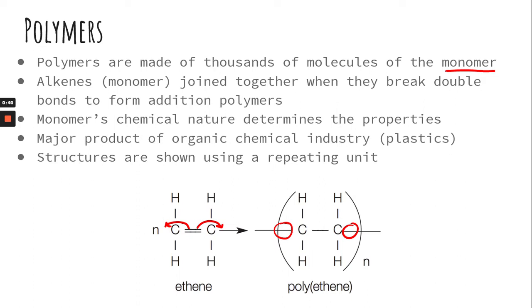The monomer's chemical nature determines the properties of the polymer. The major product of organic chemistry in the industries for polymers is plastics. Structures are shown as a repeating unit. So you always want to make sure that you include a line saying that it can continue to chain that direction and then a line on this side to say that it continues this direction in parentheses with that letter N, just meaning that it can be repeated over and over and over again.